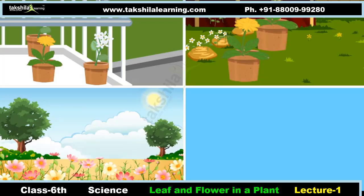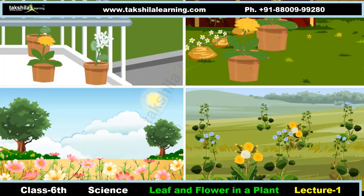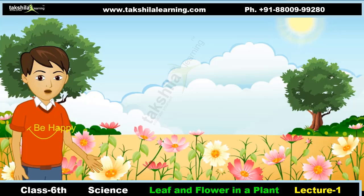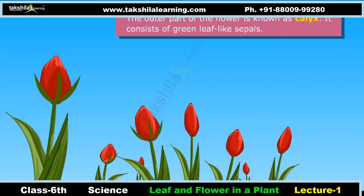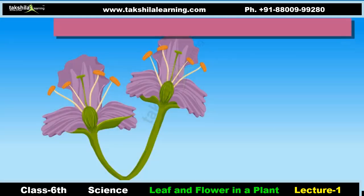We see flowers all around us — in balconies, in lawns, in parks, on sidewalks. Flowers of varied hues and colors fill our hearts with happiness. Big or small, red or blue, all flowers have the same structure. The outer part of the flower is known as the calyx; it consists of green leaf-like sepals.